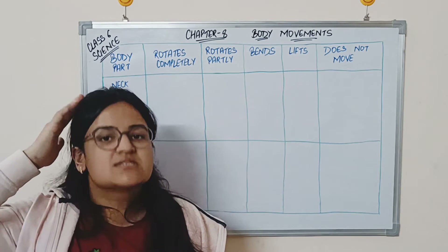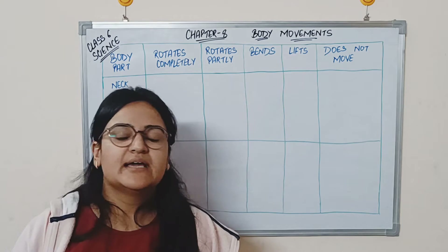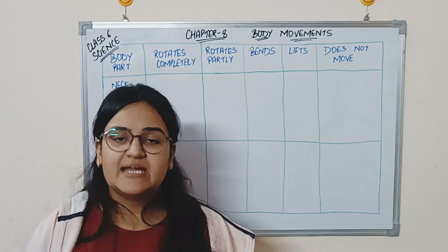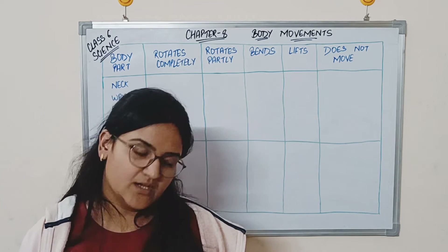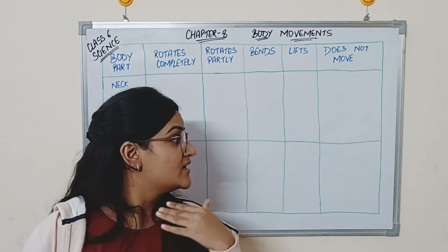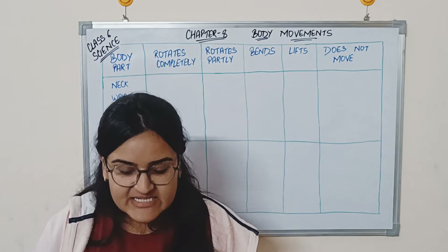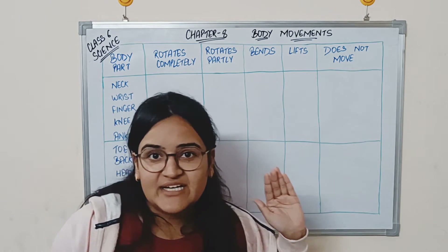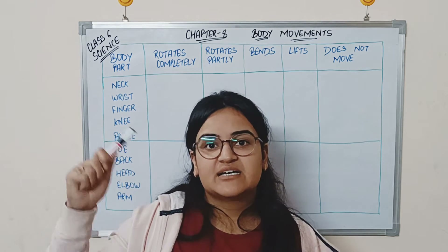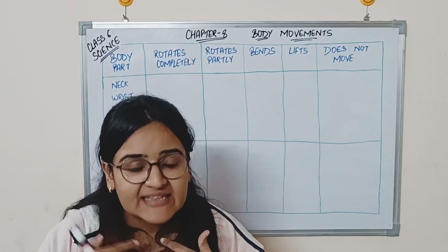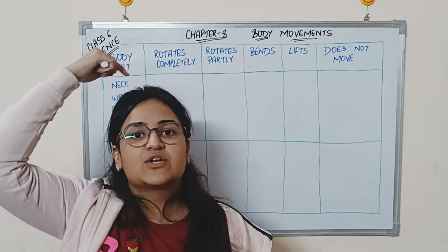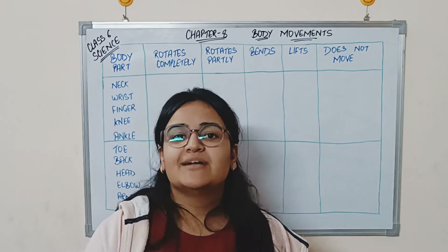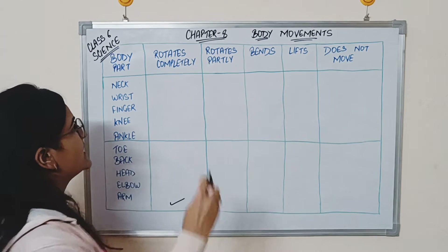Next, we come to 'rotates partly or partially.' What about the neck? You can move your neck forward, backward, right, and left. But you cannot turn it all the way around to the back. You are not an owl — owls have such joints that they can rotate their neck 360 degrees, but humans cannot. So your neck moves partly.